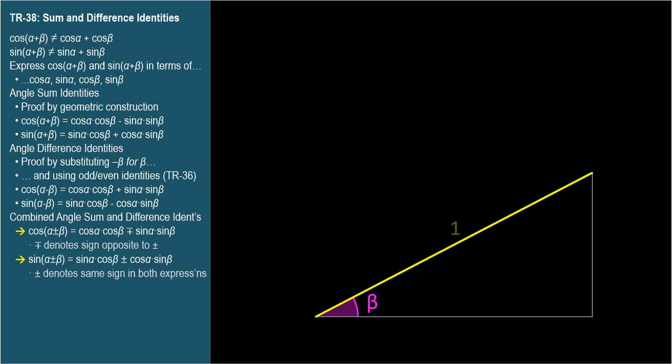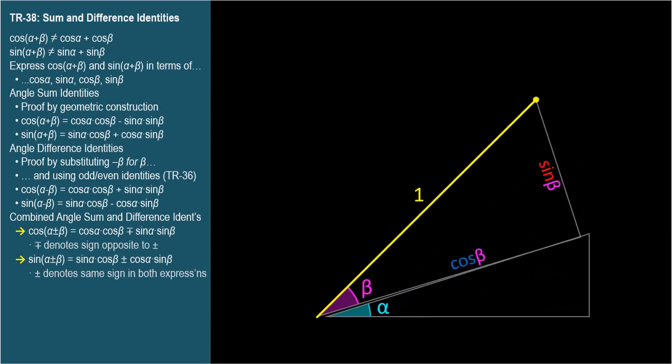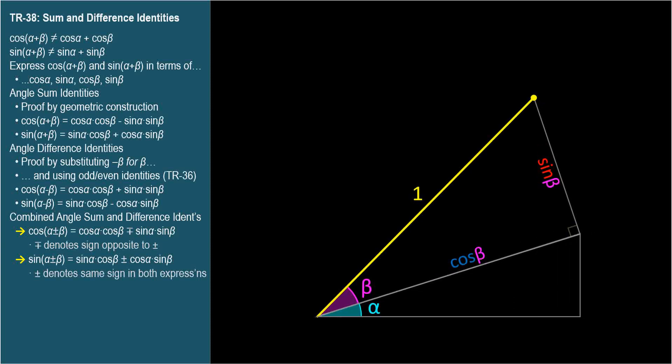Let's say the hypotenuse of the right triangle is 1, so the length of the bottom side is cosine beta. Remember, cosine beta equals adjacent over hypotenuse, so adjacent equals hypotenuse times cosine. This way of looking at SOHCAHTOA is covered in TR-17. And the length of the opposite side is sine beta. Now we're going to bring in another right triangle with acute angle alpha, and wedge it underneath beta's triangle, so the hypotenuse of alpha's triangle is the bottom of beta's, cosine beta.